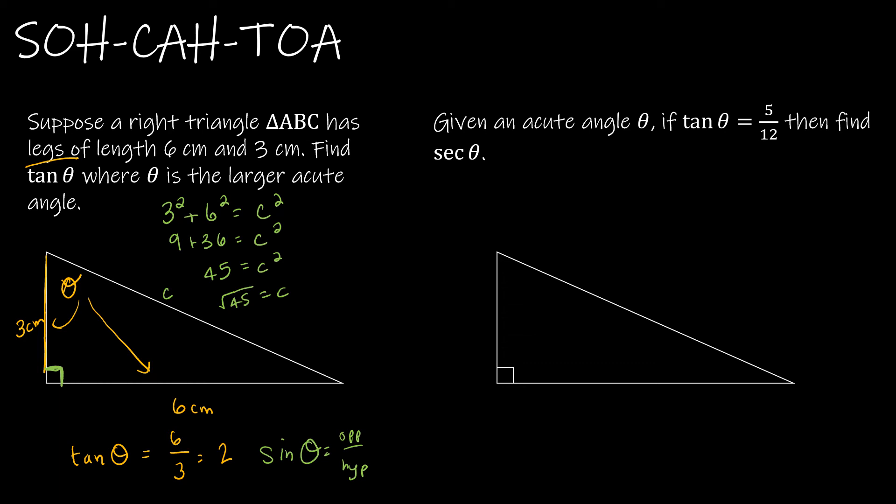If I take the square root of both sides, typically we wouldn't leave it at radical 45. We would say 45 is the same as 9 times 5, and the square root of 9 is 3. So 3 radical 5 is equal to c.